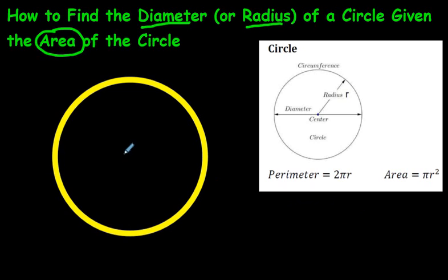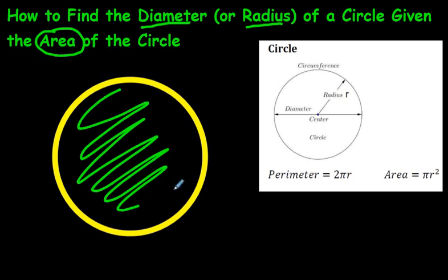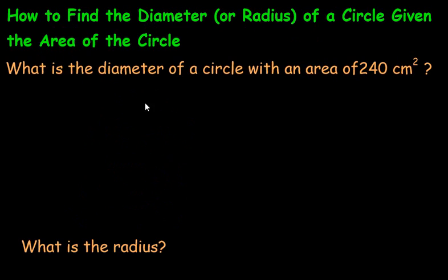But for now let's just say what we're looking for is they're going to give us the area of the circle, this whole inside area, and we're supposed to come up with what is the diameter or the radius. Remember the radius is half of the diameter. So let's look at a question right here.